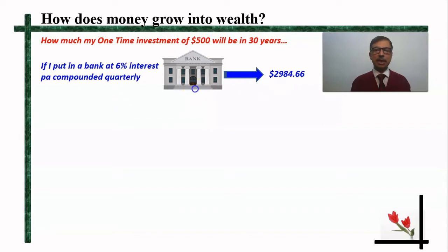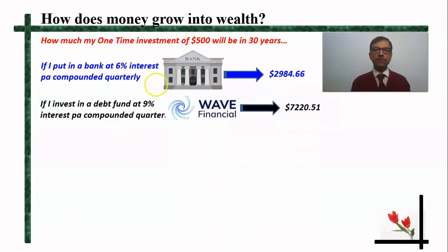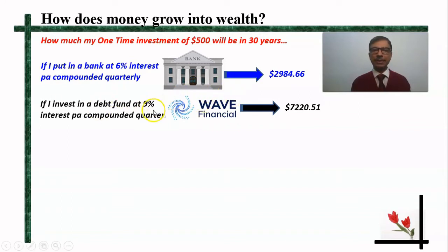Let us consider another case. Suppose that person puts his money in some debt fund — a good debt fund which, on an optimistic side, will give about 9% interest compounded quarterly. Normally a good debt fund would give this much. At the end of 30 years, what he will get is $7,220. This $500 becomes $7,220 — so there is a notable difference in growth.